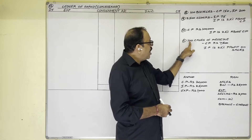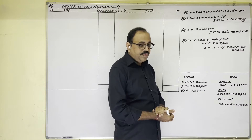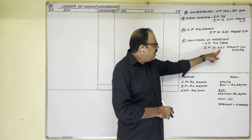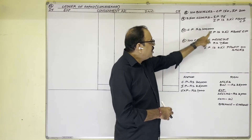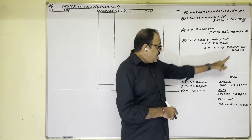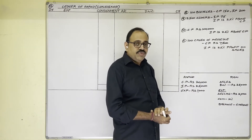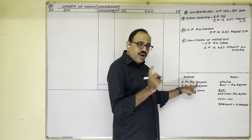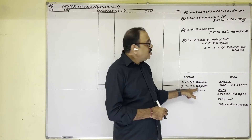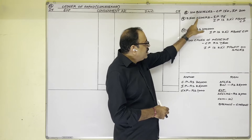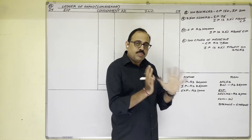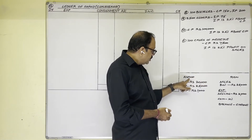In problem 11, 100 cases of medicines were sent by the consignor; cost price is 7,500 and invoice price is 25% profit on sale. In problem 10 it was 25% profit on cost price; in problem 11 it was 25% profit on sale. Now in problem 12, the cost price of total goods is 20,000 and invoice price of total goods is 25,000 — no quantity given, no percentage given, just total amounts directly.